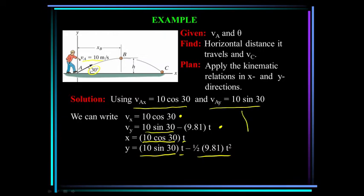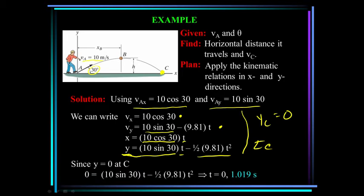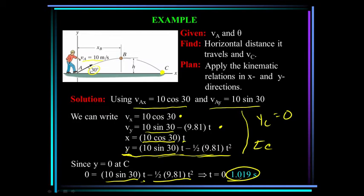We need to know something about the problem at point C. We know the y position at point C is equal to 0. Substituting into the y equation: 0 equals 10 sine 30 times t minus one-half times 9.81 times t squared. Solving for t, we get the time to reach C is a little over one second. Now that we know the time, we substitute back to find x at point C: x equals 10 cosine 30 times 1.019. We also find the y velocity at point C by substituting time into the velocity equation.